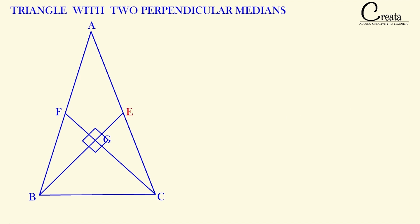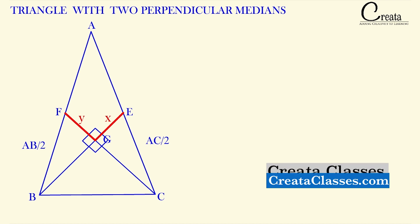We know point E and point F are midpoints of AC and AB respectively. So BF is equal to AB/2 — BF is half of side AB, since F is the midpoint. Similarly, CE is equal to AC/2, half of the length AC. Let's assume EG as X and FG as Y.